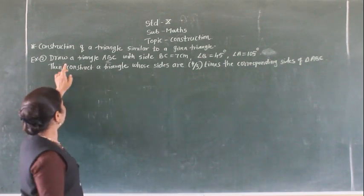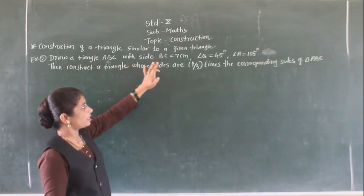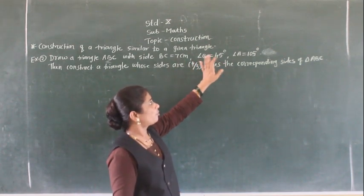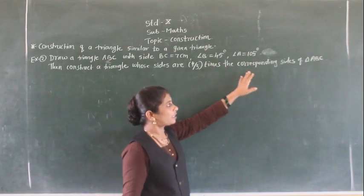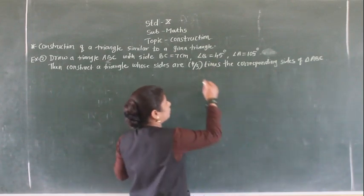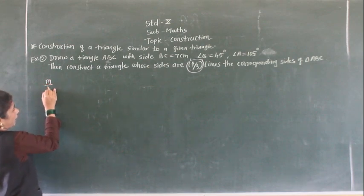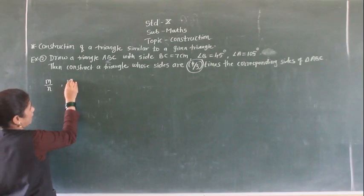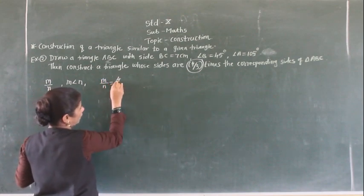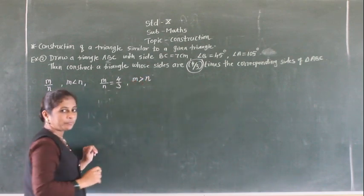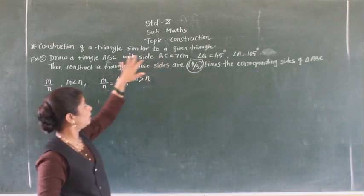Now we will see the next example. Draw triangle ABC with BC equals 7 cm, angle B equals 45 degrees, and angle A equals 105 degrees. Then construct a triangle whose sides are 4/3 times the corresponding sides of triangle ABC. The scale factor is 4/3, so here M is greater than N.